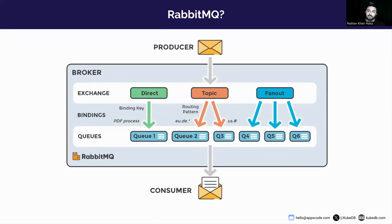Here's a simple diagram of how RabbitMQ functions. A producer publishes messages into RabbitMQ. RabbitMQ provides multiple exchange types: direct, topic, and fanout. In a topic exchange, messages are routed to queues bound by labels or keys. Direct exchange sends messages to queues bound directly to the exchange. Fanout publishes messages to all queues without any strict binding. The consumer then consumes messages either in acknowledged or unacknowledged mode.